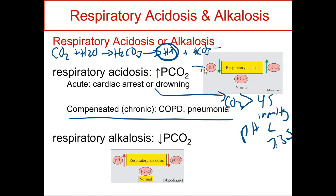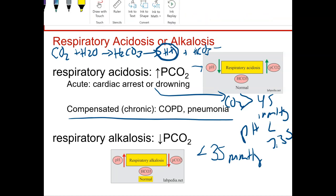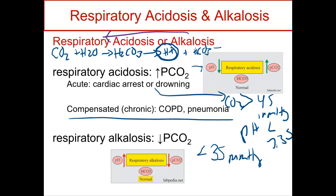If we had respiratory alkalosis, this is due to maybe a hyperventilation occurring — an anxiety attack or a drug overdose. For respiratory alkalosis, the CO2 is going to be low because you're exhaling it and getting rid of it. Looking at the equation, it now goes to the left, and now we have too few hydrogen ions, so we're in an alkalosis state. You probably more often see an acute form. If someone's having a panic attack or hyperventilating, you just have them breathe into a paper bag so they'll rebreathe their own CO2 and raise their CO2 levels back up.